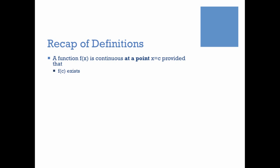The first condition is that f(c) exists — another way of phrasing that is that f(c) is defined. The second is that the limit as x approaches c exists, and the third is that those two things agree, so that the limit and the function value at c are the same.